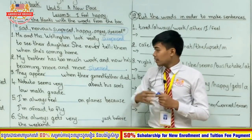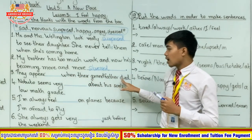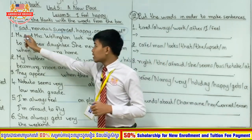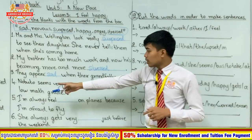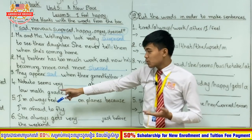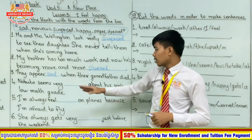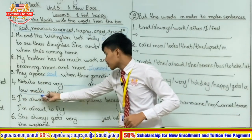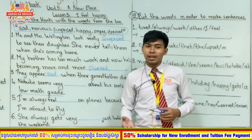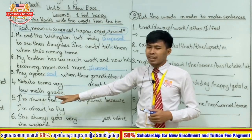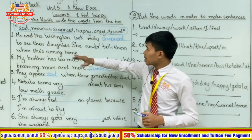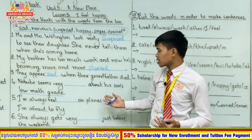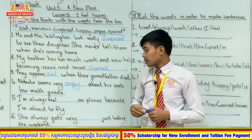Number three: they appear blank when their grandfather died. When a family member dies, we always feel sad — so the answer is sad. Number four: Nobuto seems very blank about his son's low math grade. Focus on the phrase 'low math grade' — if you are a dad and your son has a low grade, of course you feel angry. The answer is angry: Nobuto seems very angry about his son's low math grade.